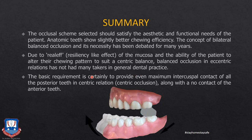Although creating balanced occlusion is very difficult — requiring expertise, experience, facebow transfer, jaw relationship records, and a semi-adjustable articulator — the basic requirement of any occlusal scheme is certainly to provide maximum intercuspal contacts of the posterior teeth in centric relationship along with no contact of the anterior teeth. There should be sufficient overjet of the anterior teeth with minimum overbite so that the dentures remain stable during occlusion. That brings us to the end of this lecture.